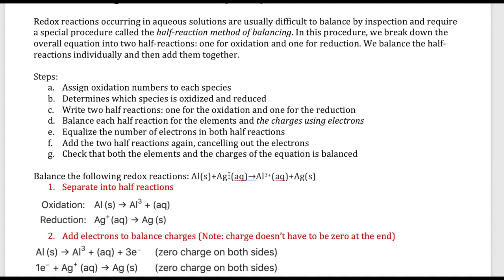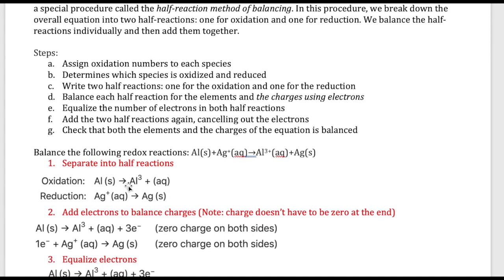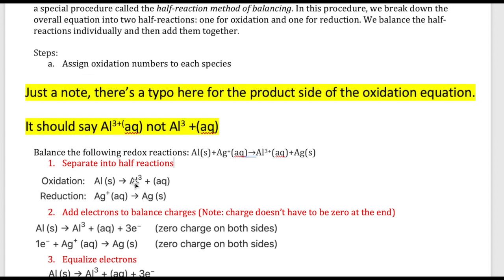The first thing you do is identify which species is oxidized and which is reduced — so you assign oxidation states for all species. Aluminum is zero, silver ion is plus one, aluminum ion is plus three, and silver element is zero. Aluminum is oxidized because it goes from zero to plus three, and silver is reduced because it goes from plus one to zero. Once we identify that, we separate them into half reactions.